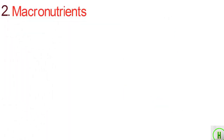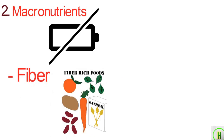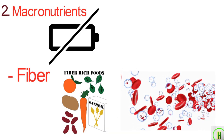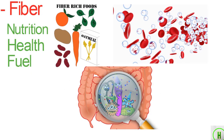Macronutrients that do not provide energy are still important. Fiber consists mostly of carbohydrates. However, because it is not easily absorbed by the body, not much of the sugars and starches get into the bloodstream. Fiber is a crucial part of nutrition, health, and fuel for gut bacteria.